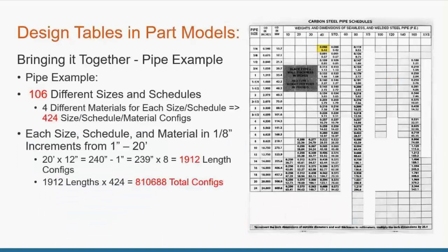Bringing it all back together with a pipe example. Let's say we have a pipe with 106 different sizes and schedules, and four different materials for each of those — that's over 400 size/schedule/material configurations. Each size/schedule/material is in quarter or eighth-inch increments from one inch to 20 feet (240 inches), which is over 1,900 different length configurations. Each one of those length configurations has over 400 different size/schedule/material configurations, leaving us with over 800,000 total configurations.